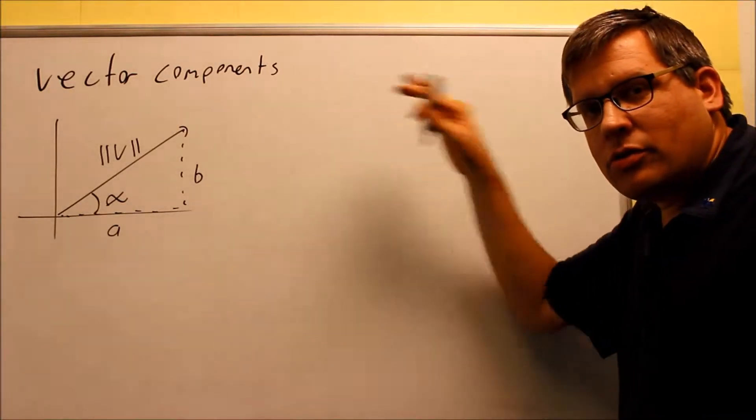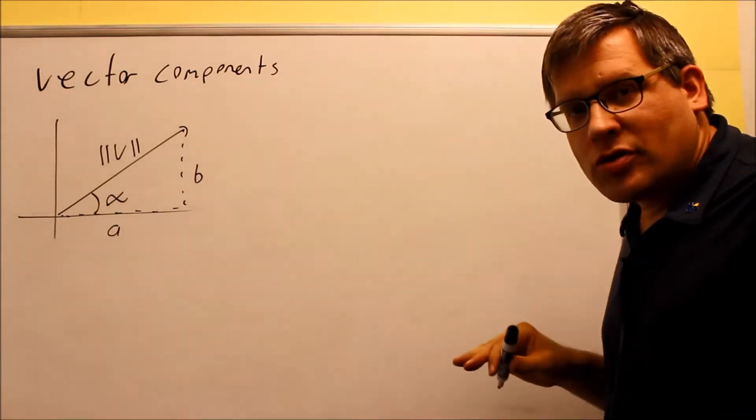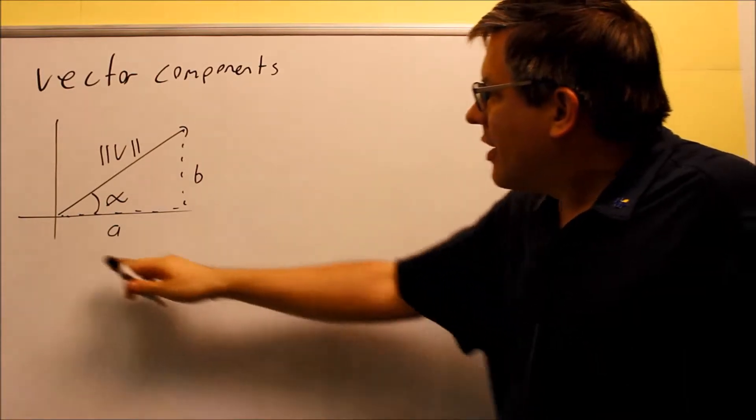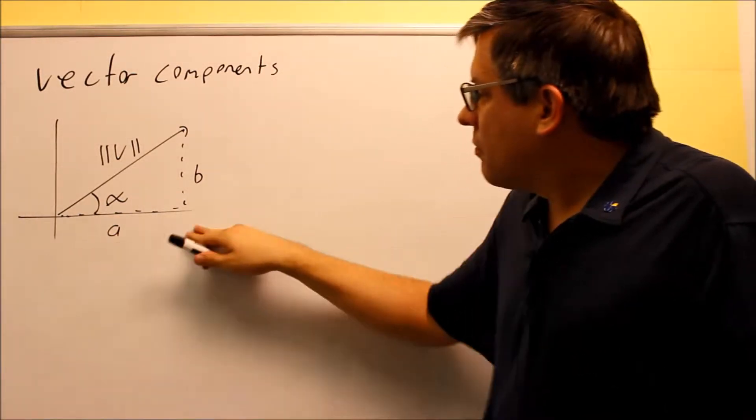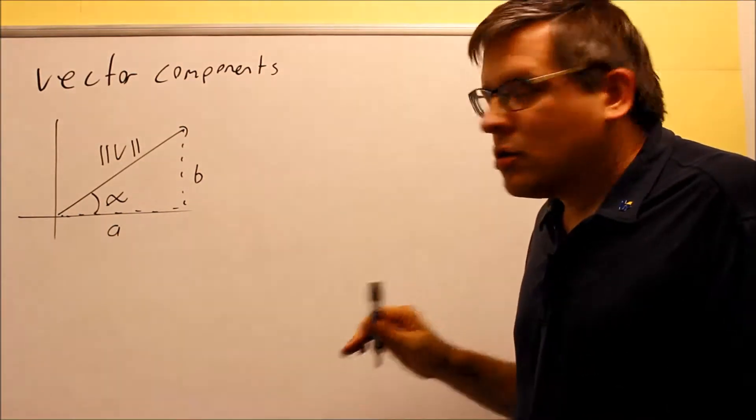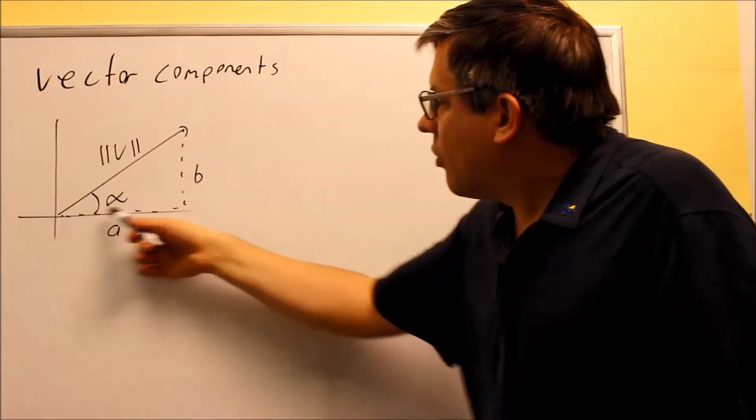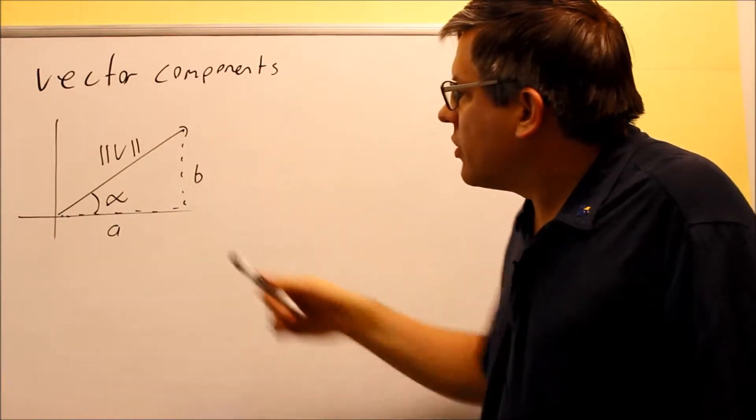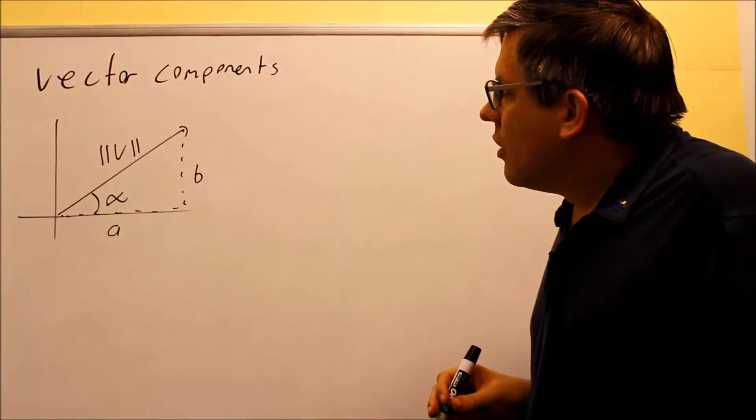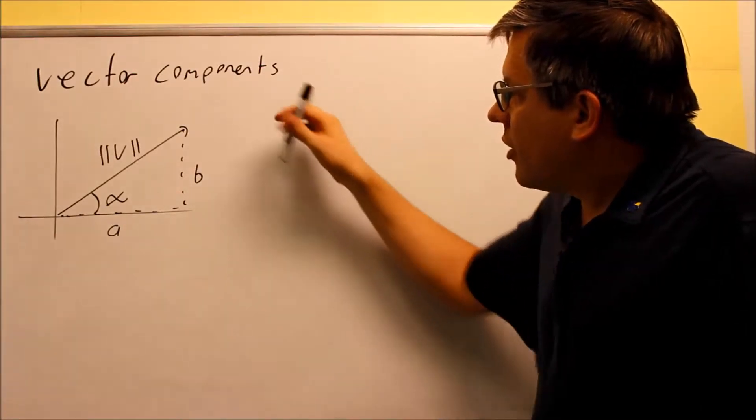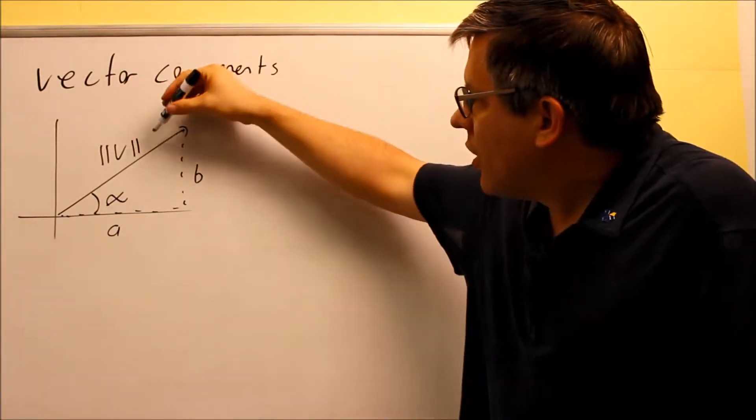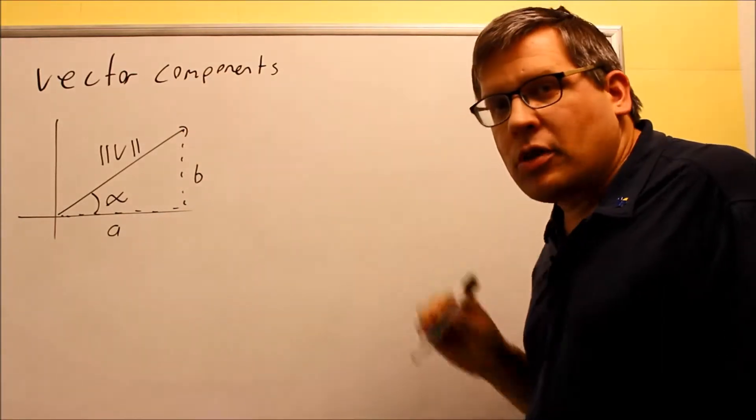Okay, so the next part of this we're getting into vector components. Now what a component is, it's basically the different pieces of a vector. So a vector can have a horizontal component and it also has a vertical component to it. So based on that we want to find a way to take this information and break it up into components.